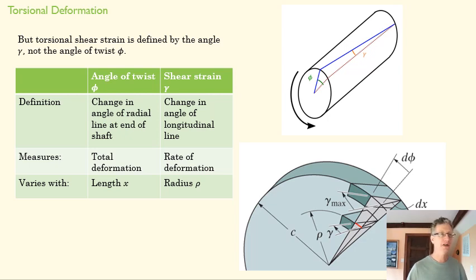Torsional shear strain is defined not by angle of twist but by the angle gamma. As we twist this disc, you can see that angle. That angle is going to be different as we move out in the radius. The line at the center isn't changing at all. It's changing a little bit here. The distance between the two faces here is the same.